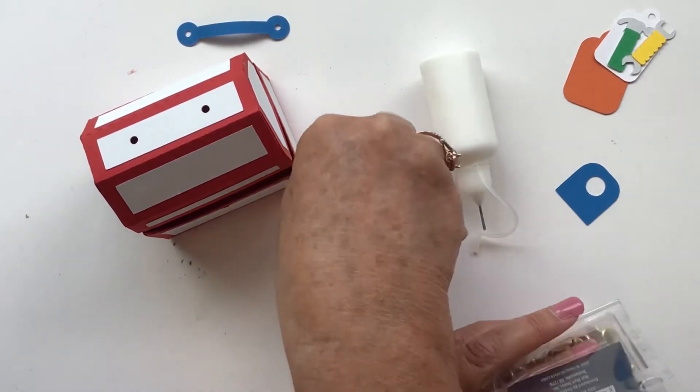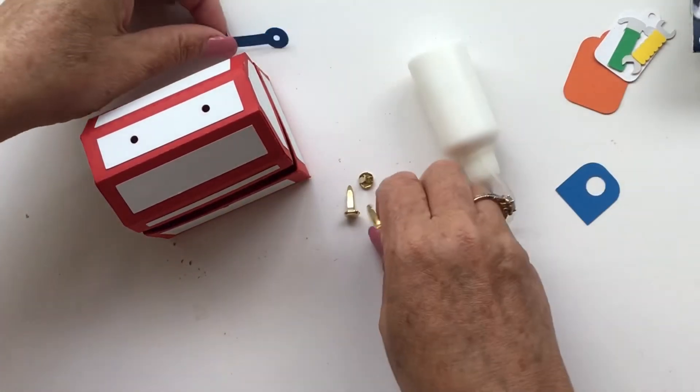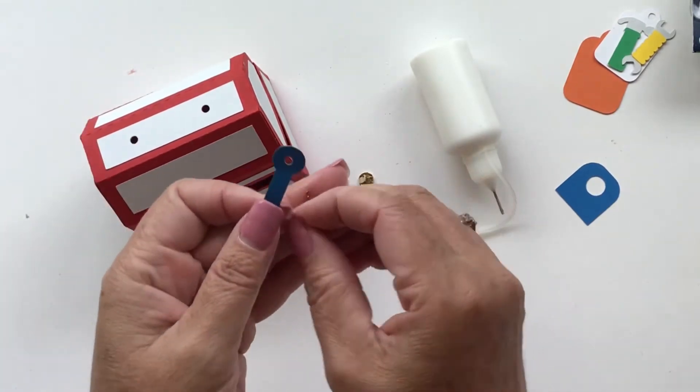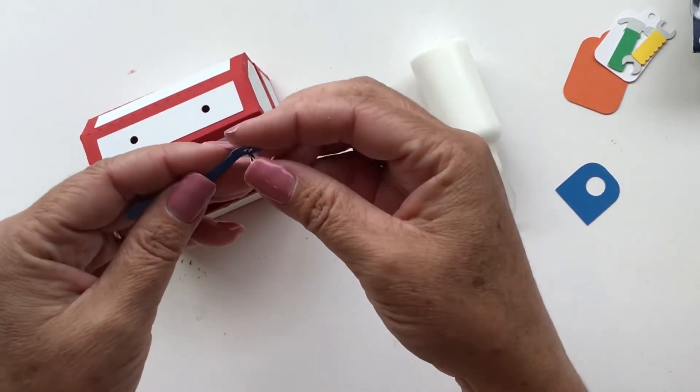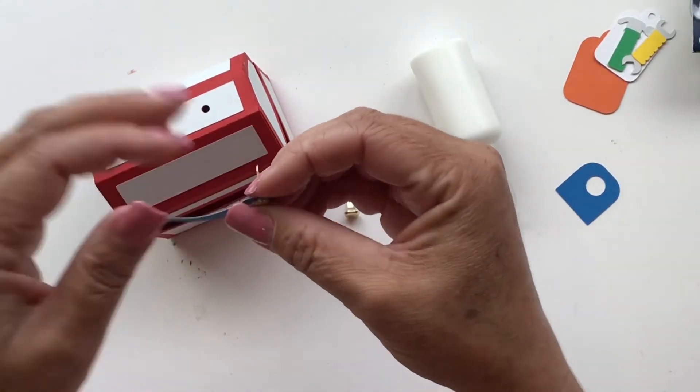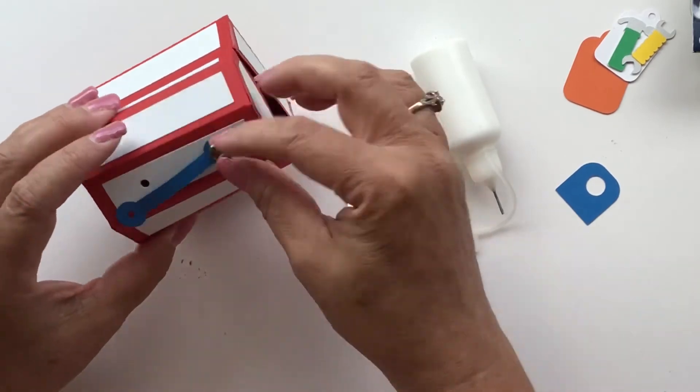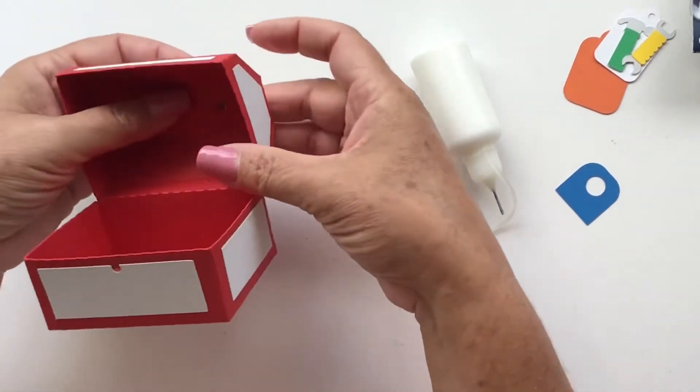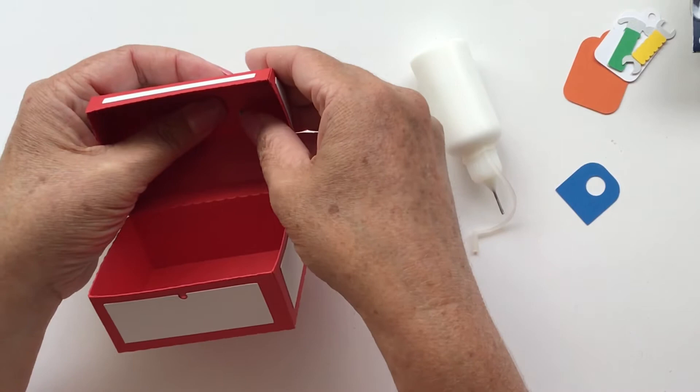And actually we're going to need a total of three of them. And then we're just going to slip this through that hole and slip it through this hole. Flip it over and open that up.